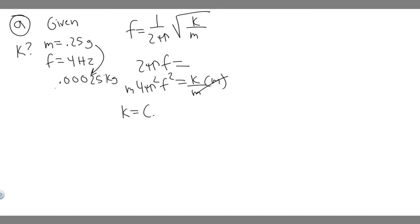Now we have all the correct units, so we can solve for k. k is going to equal the mass 0.00025 times 4π² multiplied by f². f is 4, so it's just going to be 16. So just do 0.00025 times 4 times π², and then multiply that by 16. When you do this, you're going to get that k equals 0.1579 and so on. You can just round to 0.16.